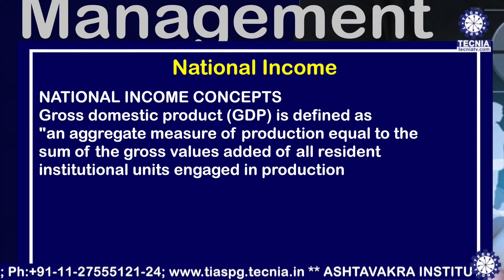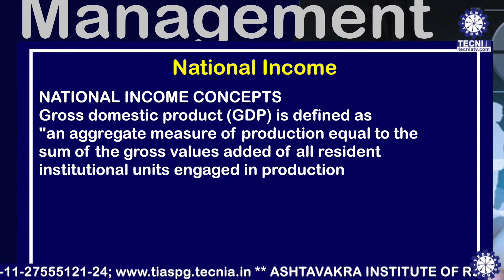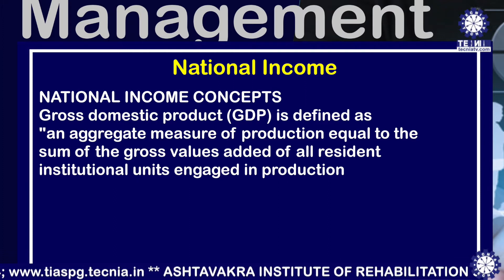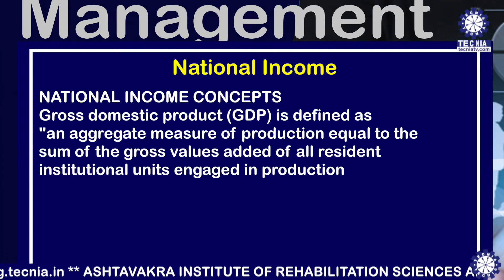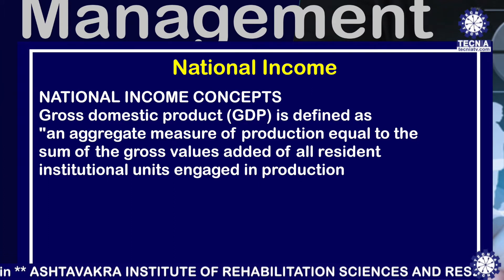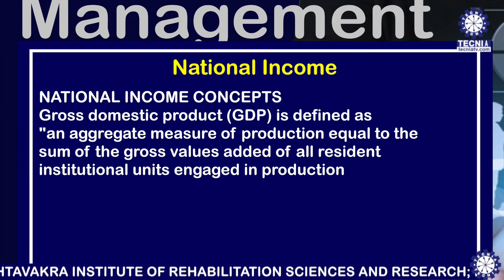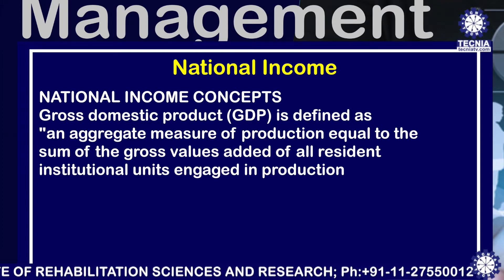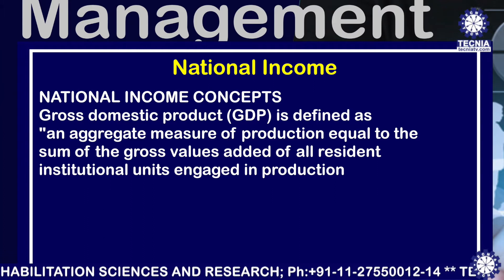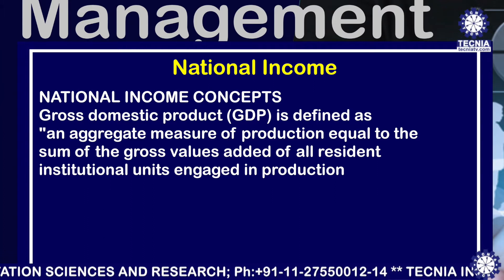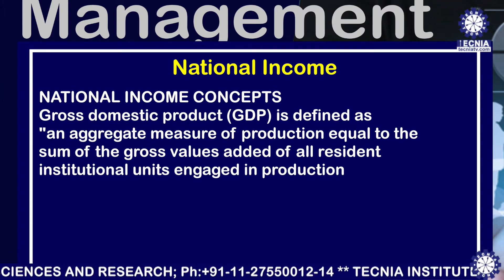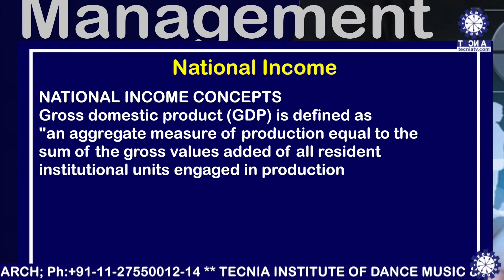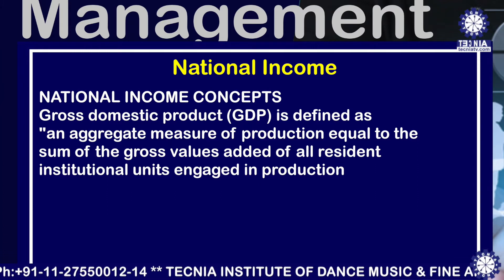The first national income concept is Gross Domestic Product, or GDP. It is defined as an aggregate measure of production equal to the sum of gross values added of all resident institutional units engaged in production. That is, it is the sum of all the production done in an economy over a period of time — that is, a year — by all the institutional units present in that economy.